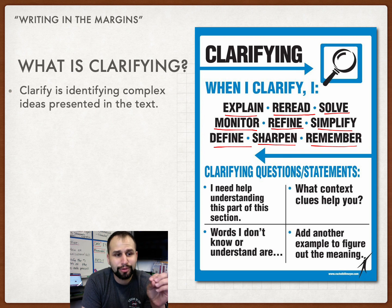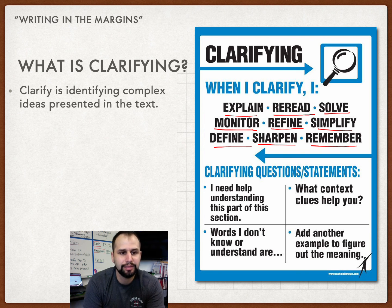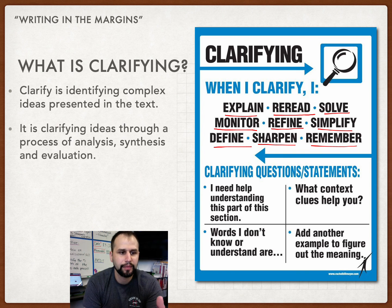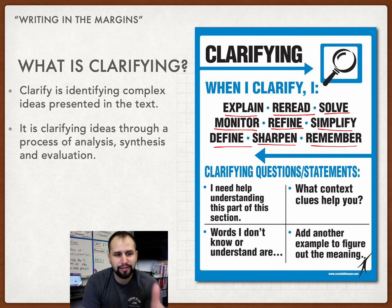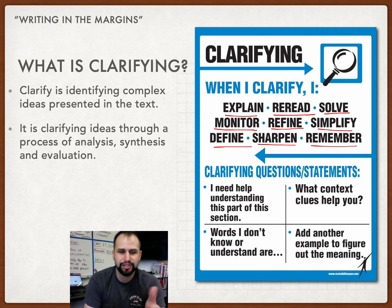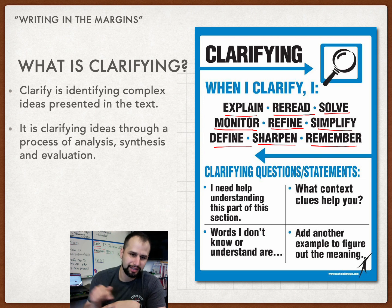Clarifying is really identifying complex ideas presented in the text. It's clarifying ideas through a process of analysis, synthesis, and evaluation — so it's kind of like a cycle.